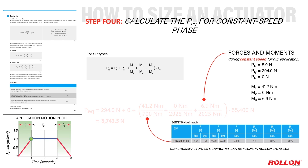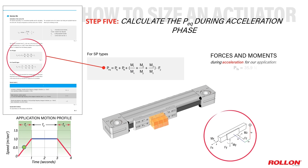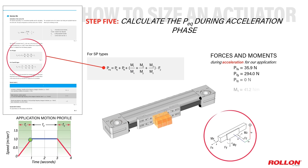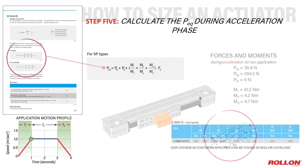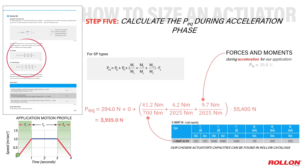Step five in sizing an actuator is to repeat the process we just executed for constant speed conditions, but now to obtain a PEQ value safety factor for periods of acceleration. With the loads and moments previously calculated along with our chosen actuator's capacities, PEQ is 3935 N for periods of acceleration.